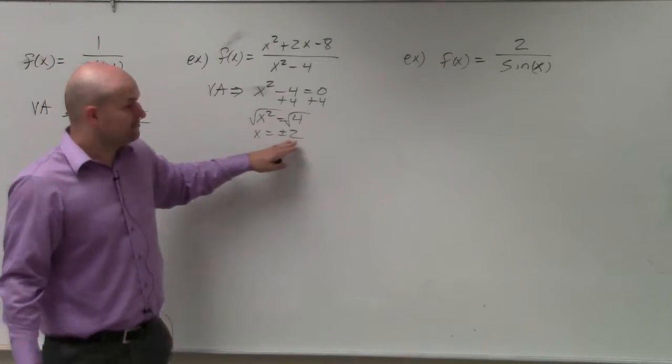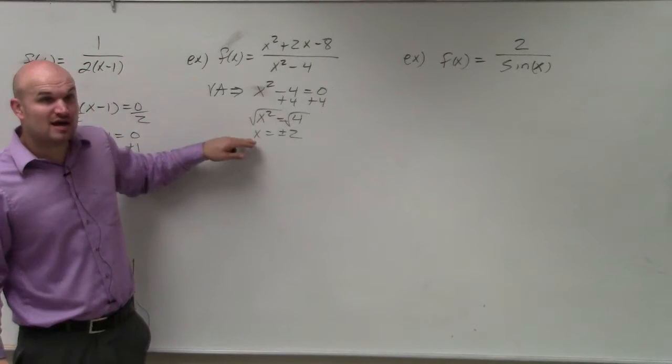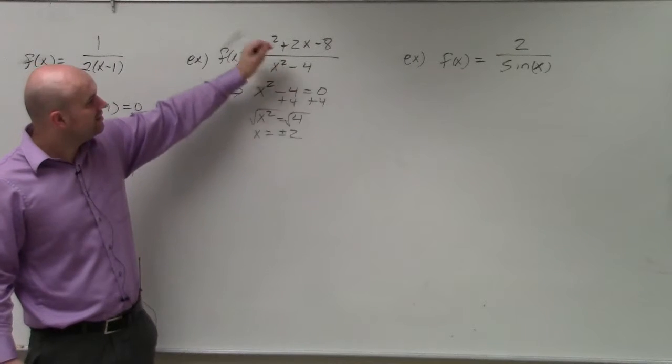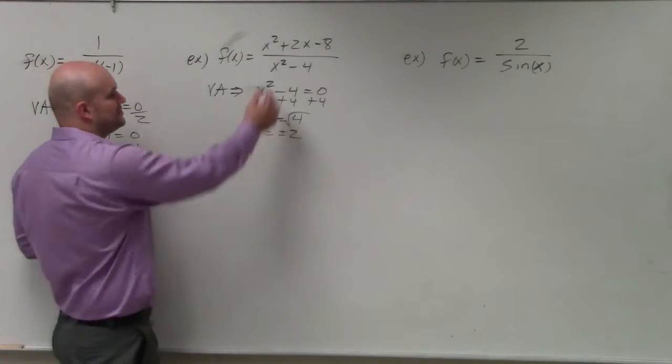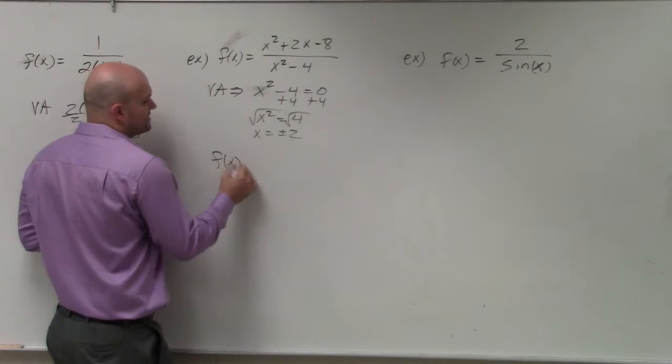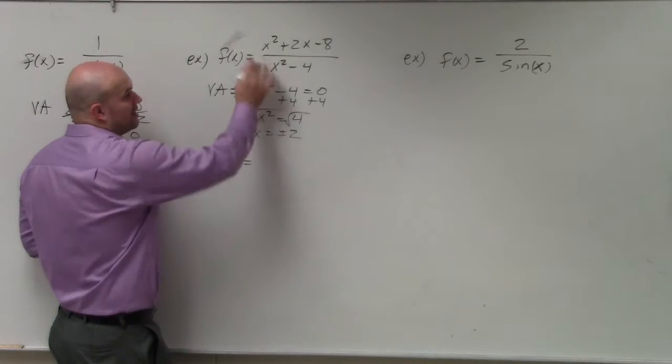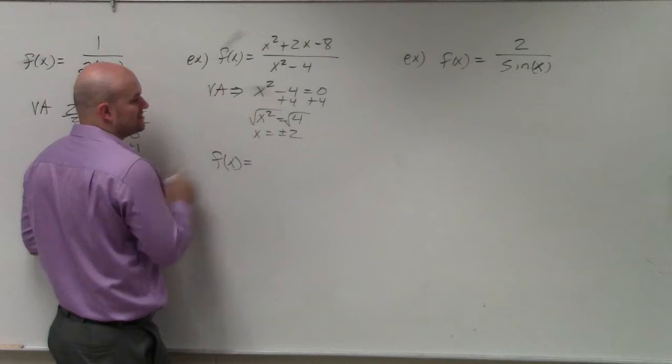So, now we know that my asymptote could be at plus or minus 2. However, I'm not sure if these are both the asymptotes or not. So, what I'm going to do is I'm going to factor my expression out. I'm going to factor the numerator and factor the denominator.